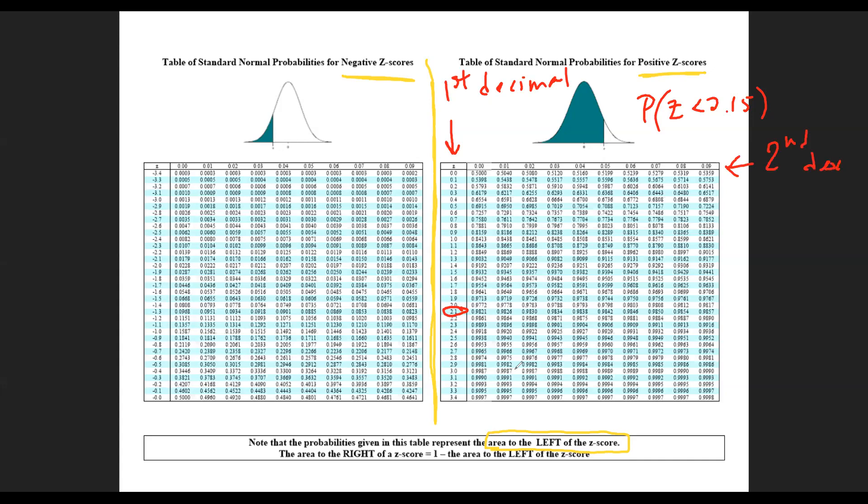So second decimal here, for us is the 5. So together we have the 2.15 and I just scroll down and find this value 0.9842. So this probability here would be 0.9842, and that's everything to the left of 2.15.